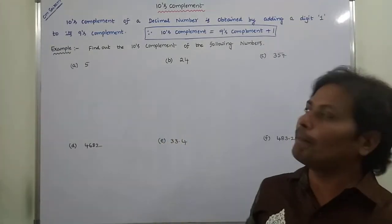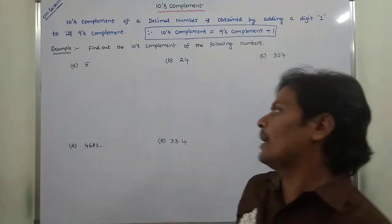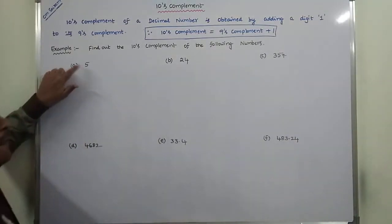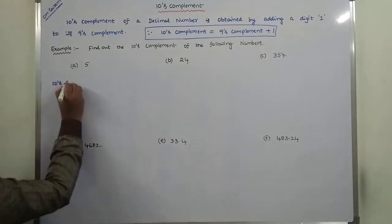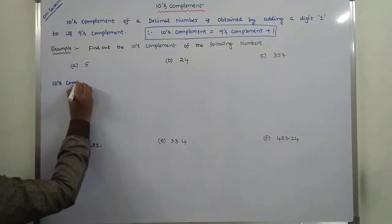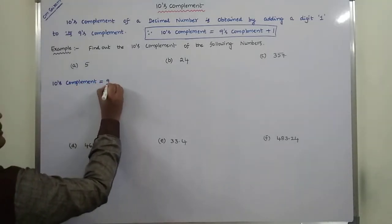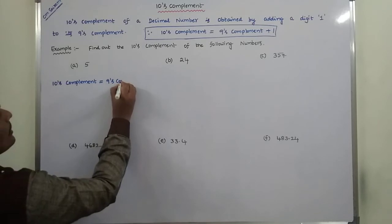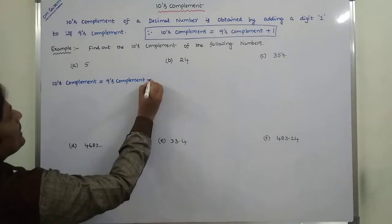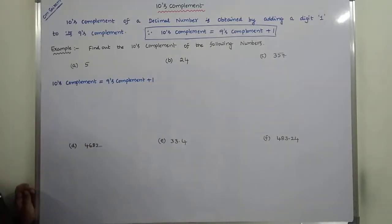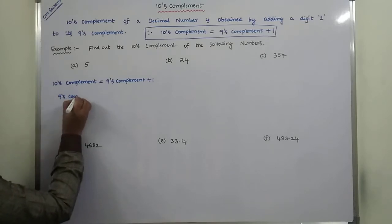Now we go for some examples. Find out the 10's complement of the following numbers. The first one is 5. The 10's complement equals 9's complement plus one. The 9's complement of 5 is...